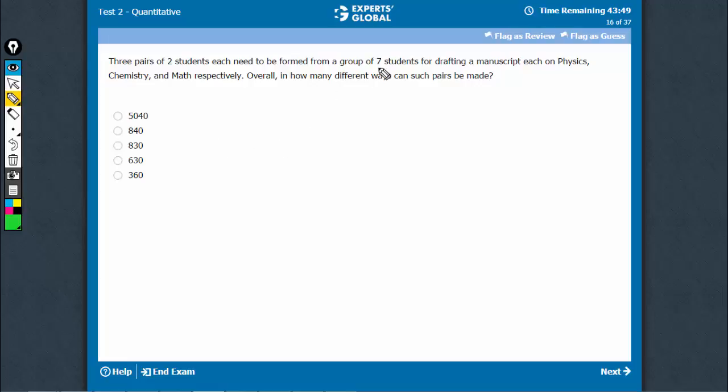So, the way this concept works is there are seven students and we need three pairs. So first of all, out of seven students, six have to be selected. The order doesn't matter. So, select six out of seven. 7C6, that's seven.